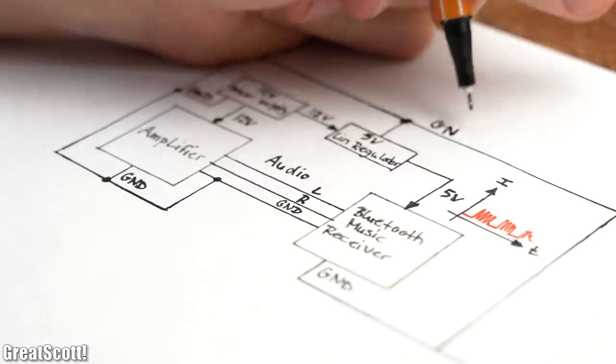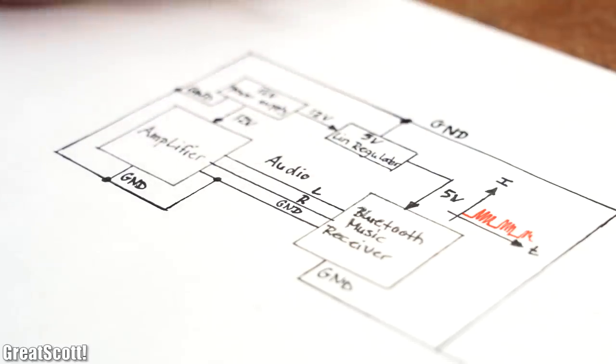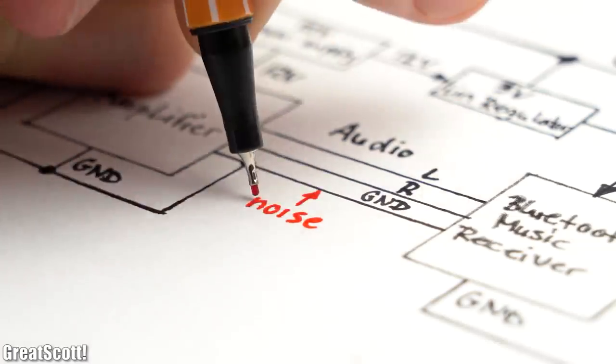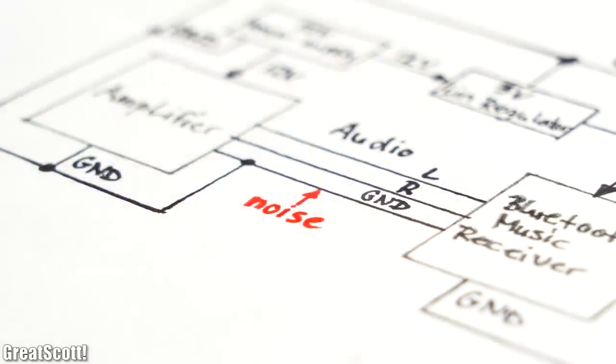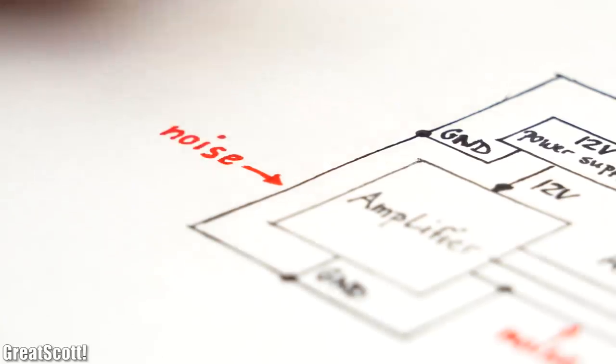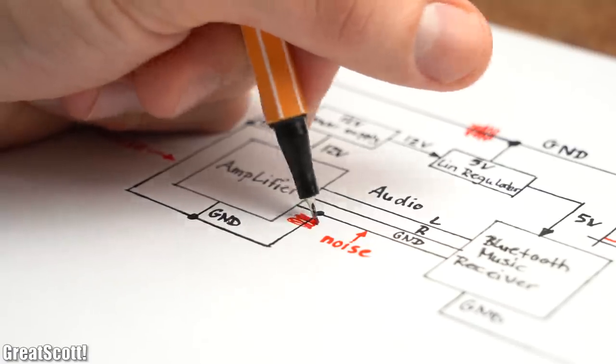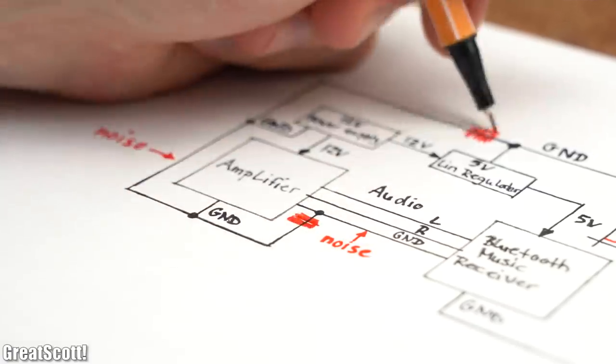And you can hear them since the amplifier as well as the Bluetooth receiver share the same ground potential. Simplified speaking, that means noise gets injected into the audio signal ground as well as the amplifier's ground. And that is something we have to change in order to get rid of the buzzing.